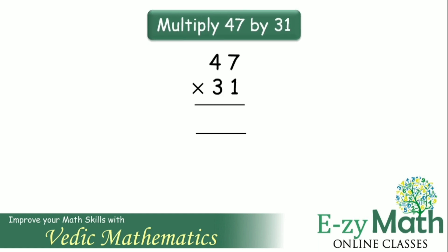Multiply 47 by 31. To obtain the units digit, multiply 7 and 1. 7 ones are 7. To obtain the tens digit, cross multiply 4 into 1 add it to 7 into 3. 4 ones are 4 plus 7 threes are 21. 4 plus 21 gives 25.